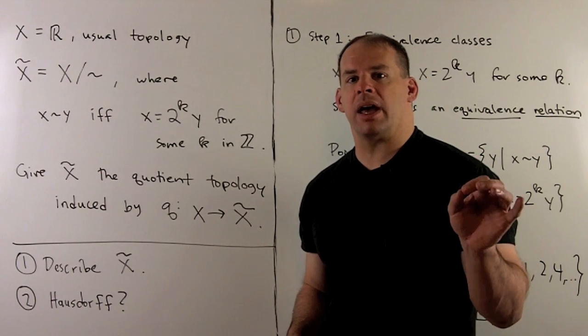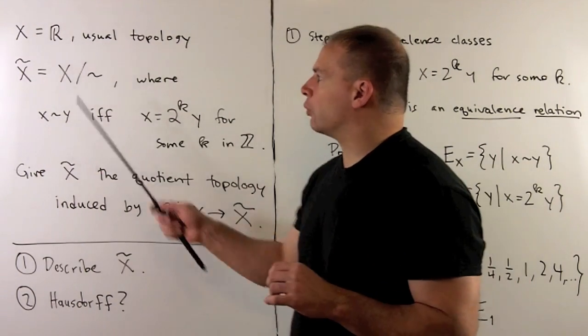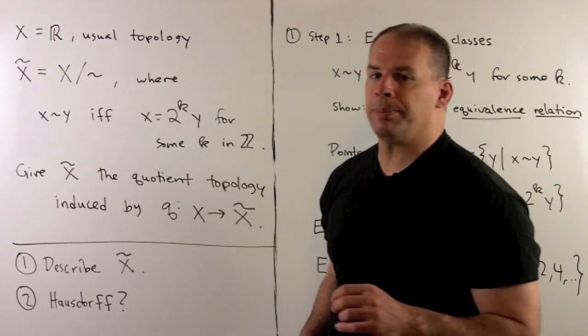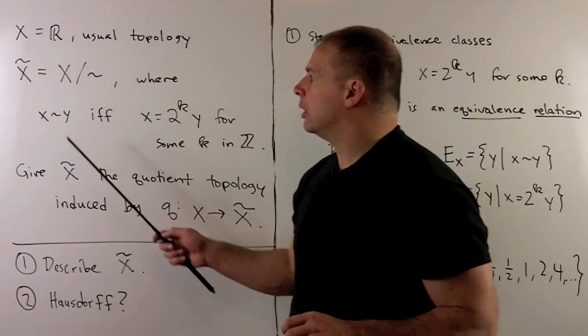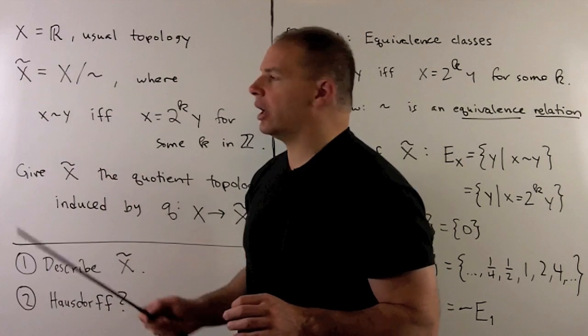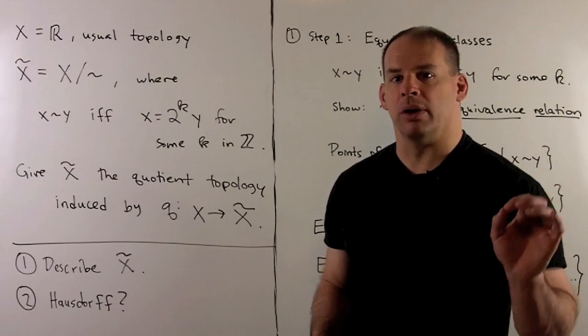Here's a second example of a non-Hausdorff topological space. We start with the real line with the usual topology, generated by open intervals. Our second space, x tilde, is just the real line quotiented out by the following equivalence relation.